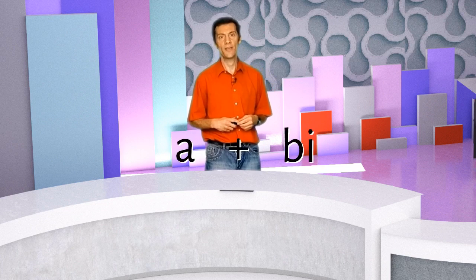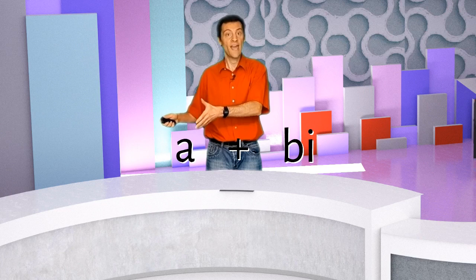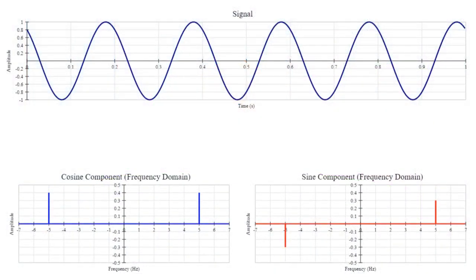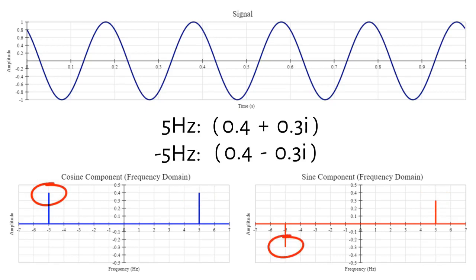In the frequency domain, the cosine and sine components at each frequency are represented by a complex number. The cosine component is represented by the real part of the complex number, and the sine component is represented by the imaginary part. There are two non-zero frequencies in this signal: 5 Hz and minus 5 Hz. So this signal could actually be represented by just two complex numbers — 0.4 plus 0.3i for the 5 Hz frequency, and 0.4 minus 0.3i for the minus 5 Hz frequency.